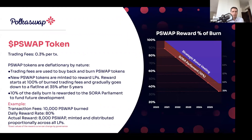The PSWAP token is a buyback-and-burn deflationary token. Every transaction fee — the 0.3% swap fee on each swap on the DEX — goes to buy back PSWAP tokens and then burn them. Every day these tokens are reminted and given to liquidity providers. The percentage of the daily burned amount that gets reminted goes down over time: at day one it's around 90%, but it goes down to about 35% after four years, making the token supply more deflationary in the future.